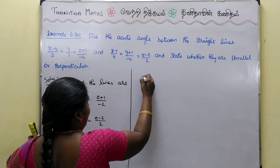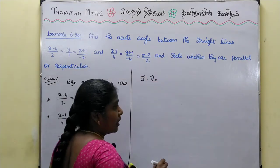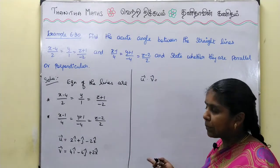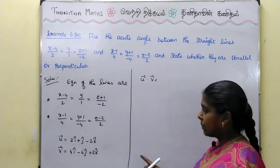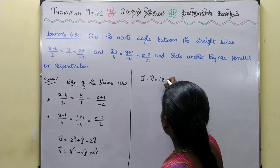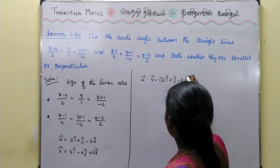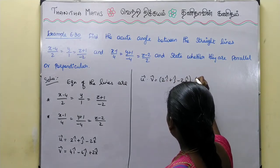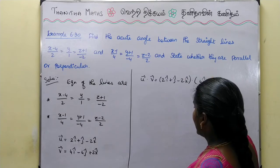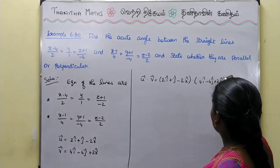Now we compute the dot product u vector dot v vector: (2i cap + j cap - 2k cap) dot (4i cap - 4j cap + 2k cap).